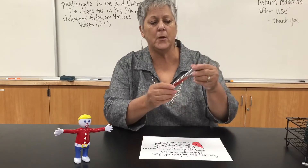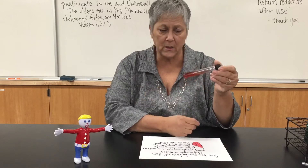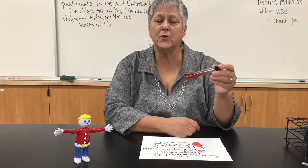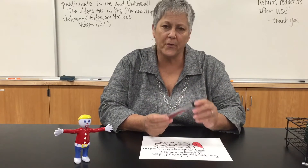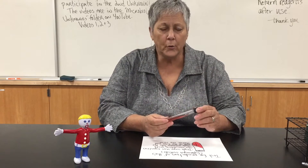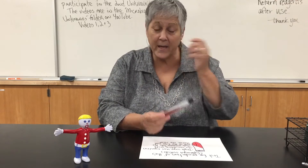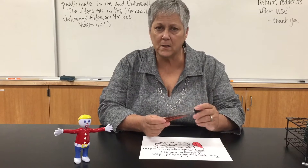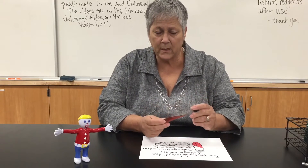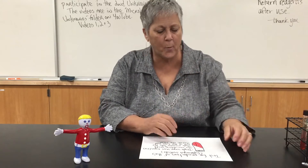We use a media known as triple sugar iron agar. It's a slant, and it contains the pH indicator phenol red. It's called triple sugar because we've got three carbohydrates in here: glucose, sucrose, and lactose. Also in this tube we have some iron salt and the amino acid cysteine. There are lots of things going on, potentially, in this tube, and I'll talk about those in a moment.